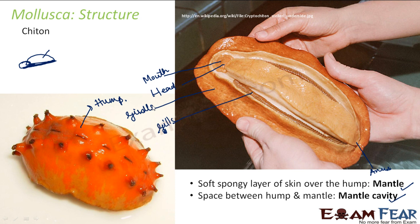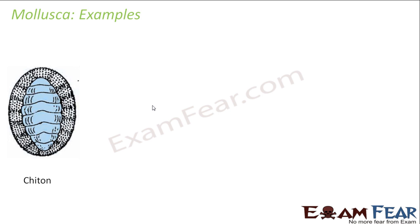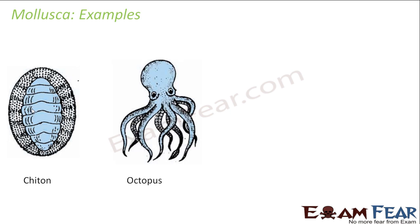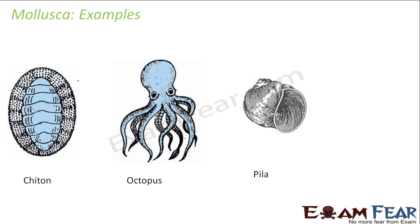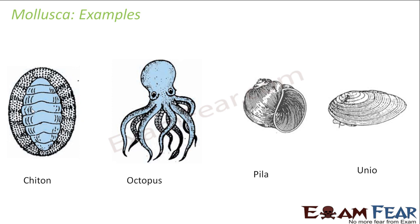Let us now look at the different examples of molluscs. Chiton is one example. Here you can see the girdle — the outer calcareous shell — and the centre portion is the hump, with the foot on its bottom side. Other examples include Octopus, Pila, and Unio. Even though their external structures look very different, their basic characteristics are all the same.